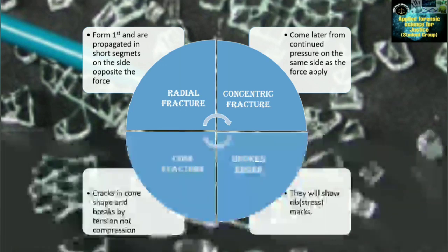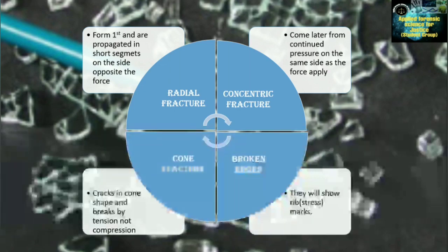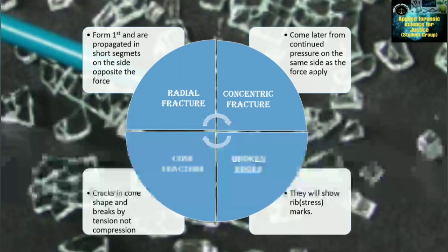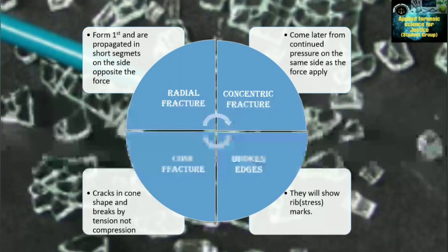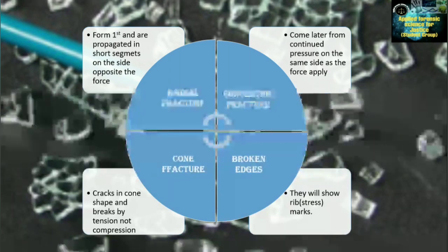Broken edges will show rib marks, also known as stress marks. Fourth is cone fracture — cracks in a cone shape that break by tension, not compression, are known as cone fractures.